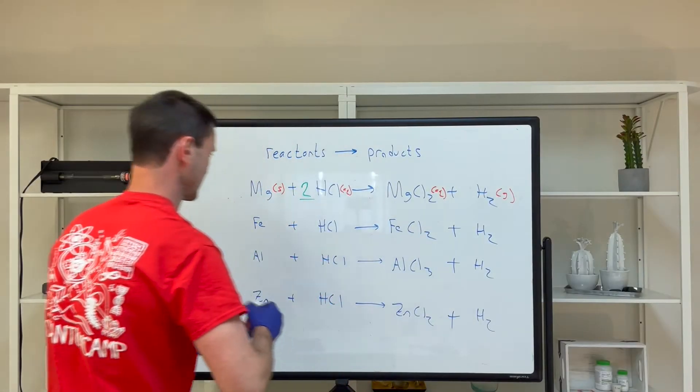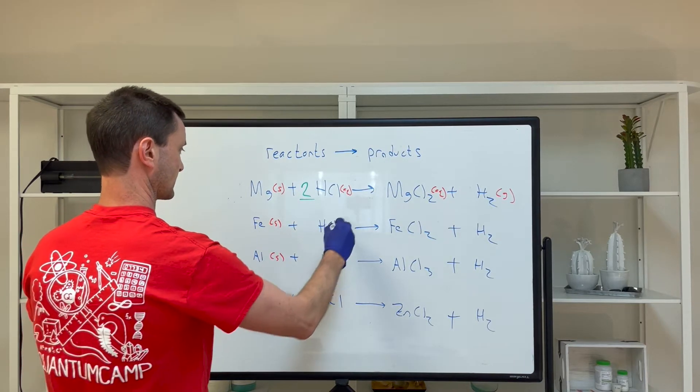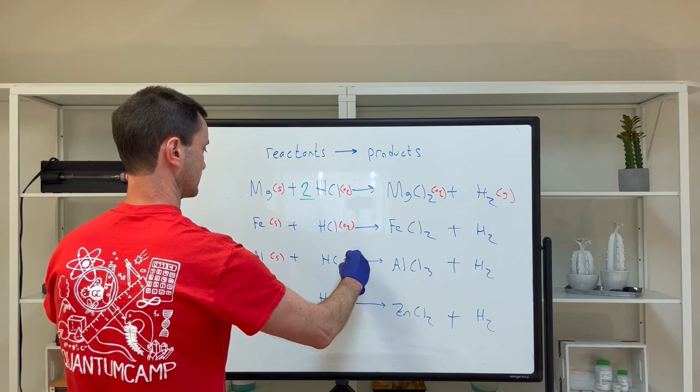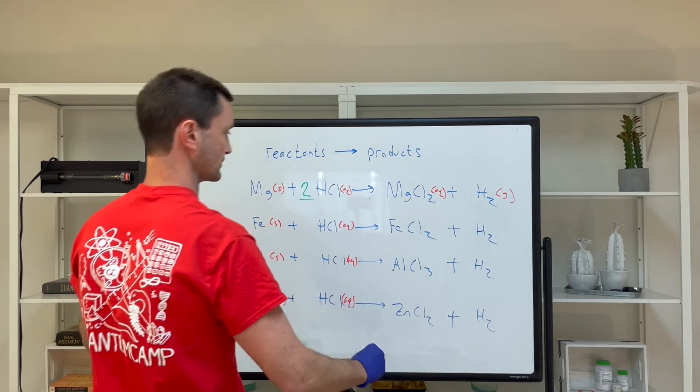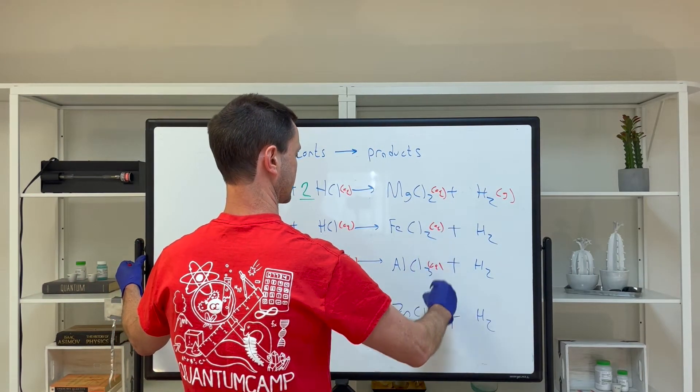Let's write in the state. The metals are all solids. Hydrochloric acid is dissolved, so we write AQ. Anything dissolved in water gets AQ. Chlorides are very soluble in water, so they get AQ.